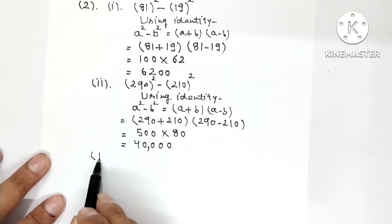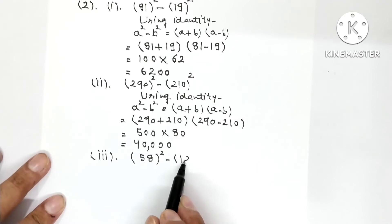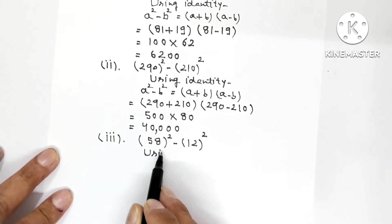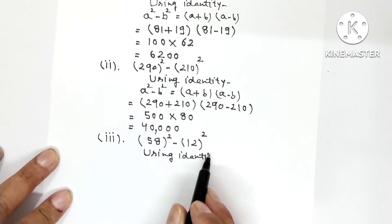Now let's do part number 3. In part number 3, 58 whole square minus 12 whole square. Here also a's value will be 58, and b's value will be 12. So you have to write the identity, using identity.